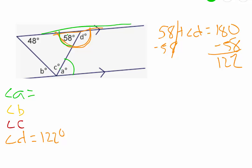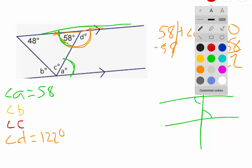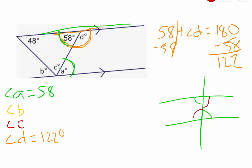Alternate interior angles are equal. So that means that angle A must be 58 degrees because angle A is an alternate interior angle with the 58 degree angle. So let me draw this out here. Alternate interior angles would be like these two angles right here, but also we would have another set of alternate interior angles. So that's kind of what we're looking at in our picture here.